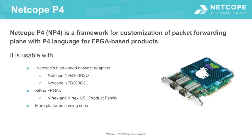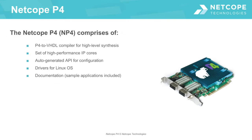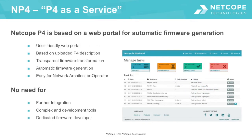Here at Netcope we have put all these advantages together and created Netcope P4 — a framework for customization of the packet forwarding plane with P4 language for FPGA-based products. The core component is a P4-to-VHDL compiler that converts a P4 description into an optimized VHDL design. It uses market-proven Netcope IP cores to achieve optimal traffic processing with performance comparable to low-level VHDL design. API for configuration and population of match and action tables, drivers for Linux operating systems, and documentation are also included to make NP4 complete and ready to use.